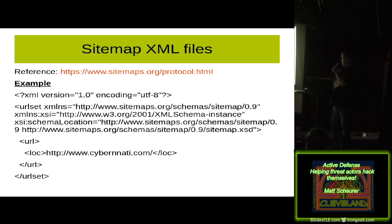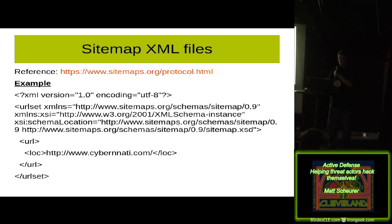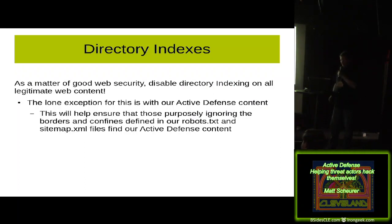You may have noticed the robots.txt file also defines where the sitemap file is located. The sitemap.xml file — you can get the reference at sitemaps.org/protocol.html. You can obviously define a whole lot of URLs in here. I'm basically just telling it to stay in the root folder. This is just a very basic site I use for demo purposes and have a lot of fun reading the logs from.